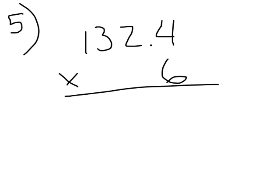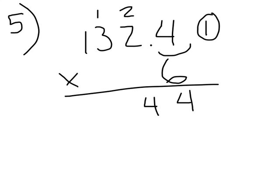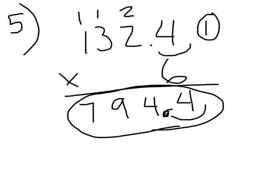Now let's do another one. How many numbers will be behind the decimal in this product? 1 number will be behind the decimal. Go ahead and multiply this problem now and write your product. Make sure to correctly place the decimal. Let's see how you did. 6 times 4 is 24. 6 times 2 is 12, plus 2 is 14. 6 times 3 is 18, plus 1 is 19. 6 times 1 is 6, plus 1 more is 7. I need to place one number behind the decimal. So my answer is 794 and 4 tenths.